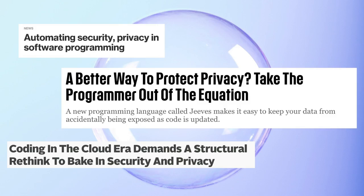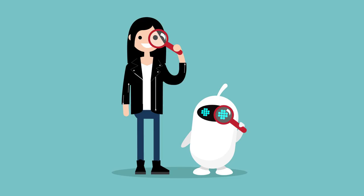As a solution to this problem, my collaborators and I have developed a language for what we call policy agnostic programming. Using this language, programmers can attach privacy rules directly to sensitive values instead of as a spaghetti of checks. Automated enforcement makes the language childproof. Using policy agnostic programming, we now need to trust only the language and not each and every individual programmer.